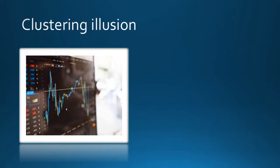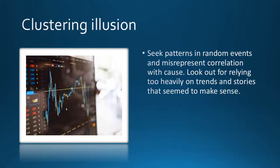The next one is the clustering illusion. This bias refers to the tendency to see patterns or clusters in random data. For example, people may believe that they see patterns in the stock market or sports scores, even though these patterns are not statistically significant. The clustering illusion can lead to incorrect assumptions about cause-and-effect relationships and can result in poor decision-making.